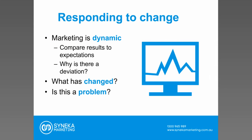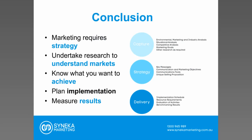Marketing needs to respond to change — compare results to expectation, understand why outcomes deviated, what has changed, and is it actually a problem? If results are different to your expectations, note that, but consider whether it is actually a problem in terms of what is being delivered. To recap those three phases: marketing requires strategy. Undertake research to understand the markets you want to reach, know what you want to achieve and plan your implementation, be able to measure those results, articulate any deviations, and ensure you're able to track results both online and offline.